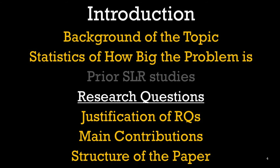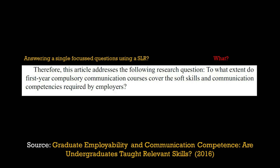Today I'm going to show you some examples of research questions that I have picked up from SLR papers related to your research areas. I have not covered all of them because there will be too many, but I have selected a few. Let's look at this first paper. This is on graduate employability. The title of the paper, which you can see at the bottom, is 'Graduate Employability and Communication Competence: Are Undergraduates Taught Relevant Skills?' — a paper from 2016. It says: 'To what extent do first year compulsory communication courses cover the soft skills and communication competencies required by employers?' It is a very focused, single question for the whole SLR.